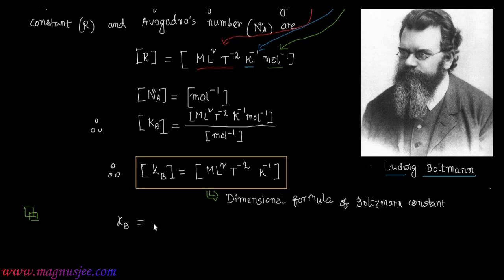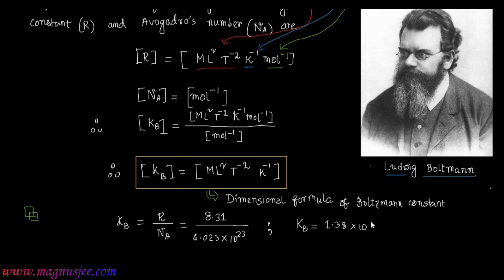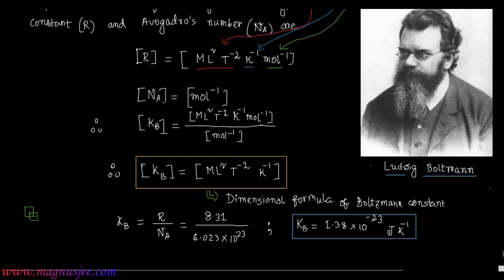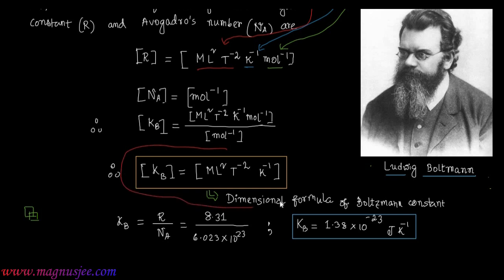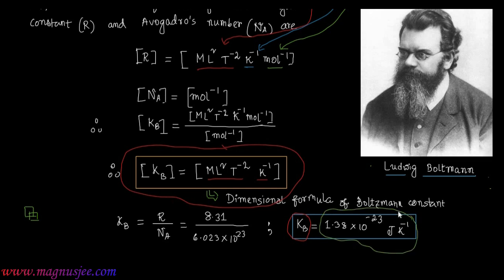In addition, we can find the numerical value of Boltzmann constant K. K equals R by Na, which is 8.31 divided by 6.023 × 10²³. Finally, K equals 1.38 × 10⁻²³ Joule per Kelvin. Kb is written as K subscript B but pronounced as K.